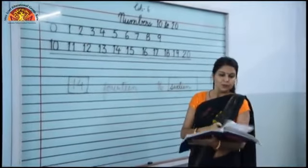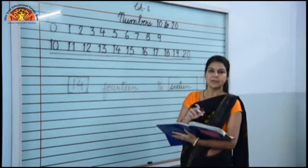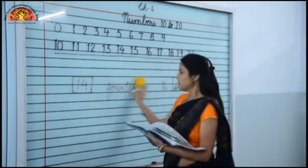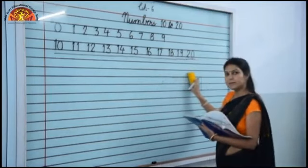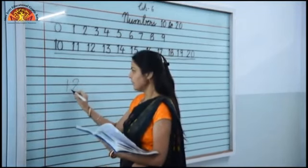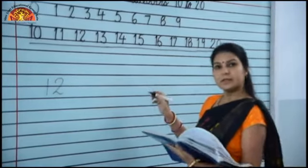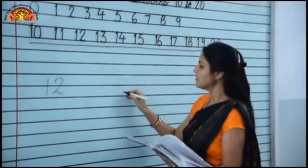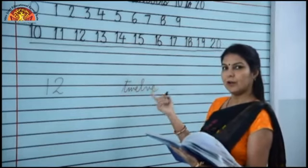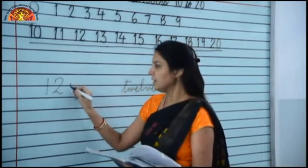Now look at question number 2 — match the number with their number names. Children, here one side numbers are given and one side number names are given. You have to match numbers with their number names. We already discussed number and number names, so you can do it very easily. First, 12 is written. We have to find out the spelling of 12 in column B. The spelling of 12 is T-W-E-L-V-E. It is written at the third number, so we will write number 3 in front of 12.